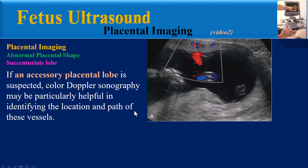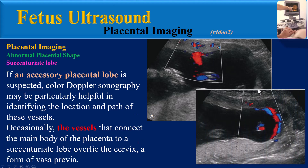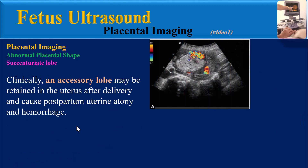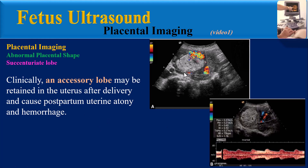Occasionally the vessels that connect the main body of the placenta to a succenturiate lobe overlie the cervix, which is a form of vasa previa. This color Doppler sonography shows vessels connecting the main portion of the placenta to the posterior succenturiate lobe. In this situation there is a risk of rupture of the vessels connecting the lobes during labor, which may lead to fetal death. Clinically, an accessory lobe may be retained in the uterus after delivery and cause postpartum uterine atony and hemorrhage.